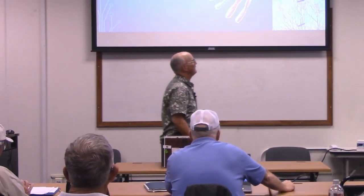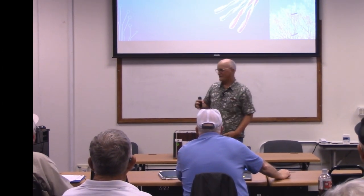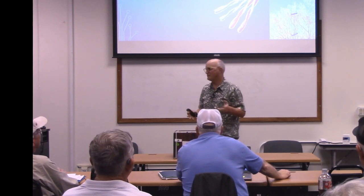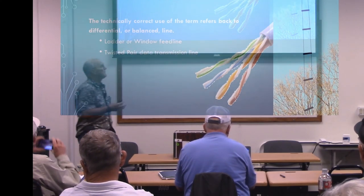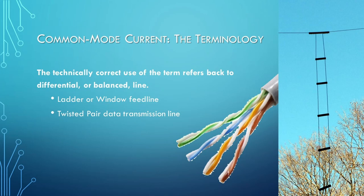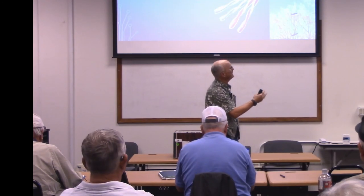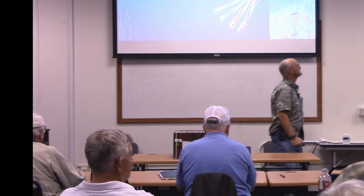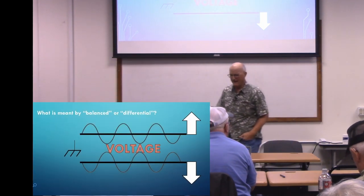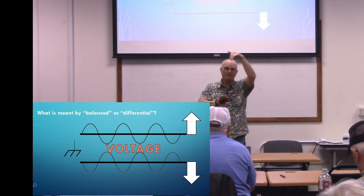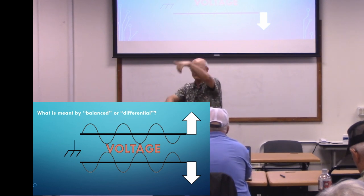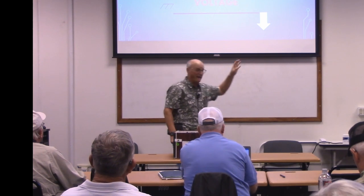Let's talk about common mode current. To understand what's going on, we have to understand the terminology. Technically, the term refers back to what's called a differential or balanced line — like the ladder line you see on the right. That's balanced — ladder line or twisted pair data transmission lines. It means the voltage on one wire is going up while the voltage on the other wire is going down. They're complementary, balanced voltages on these lines.